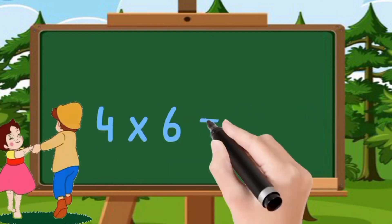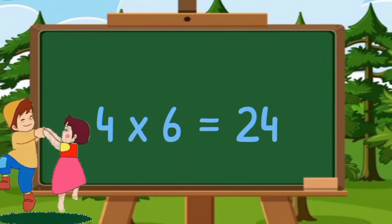Four sixes are twenty-four. Four sevens are twenty-eight. Four eights are thirty-two. Four nines are thirty-six. Four tens are forty.